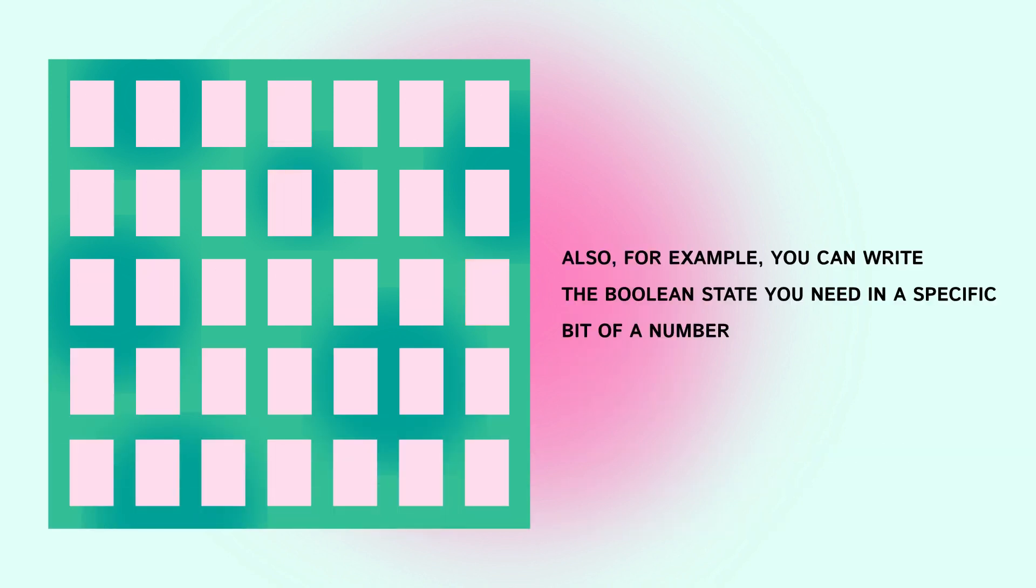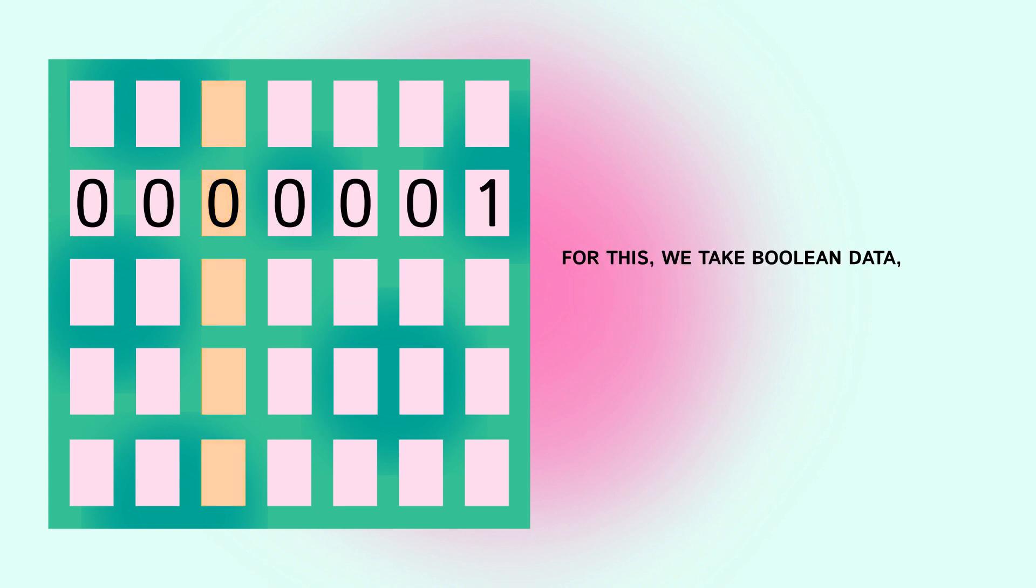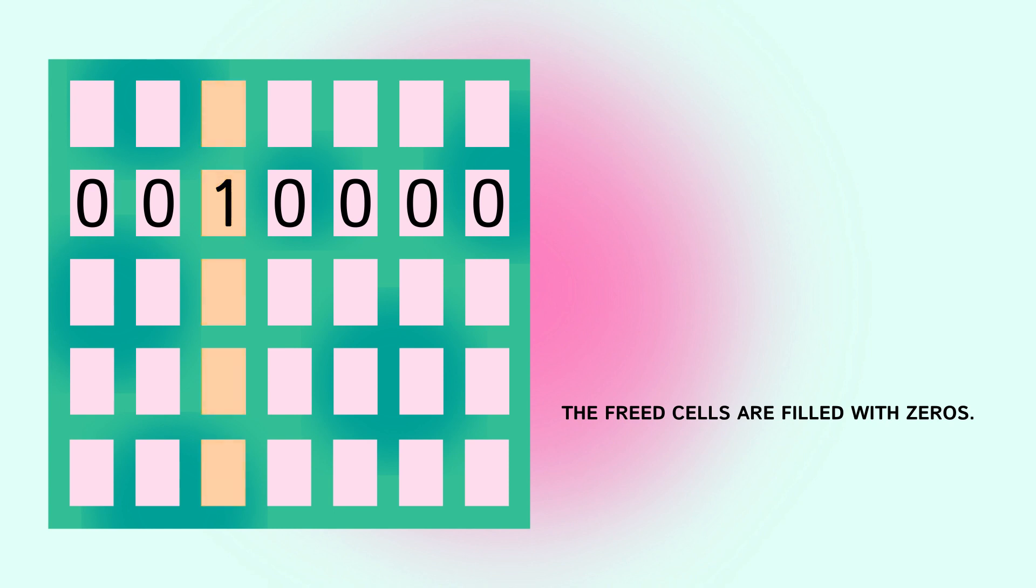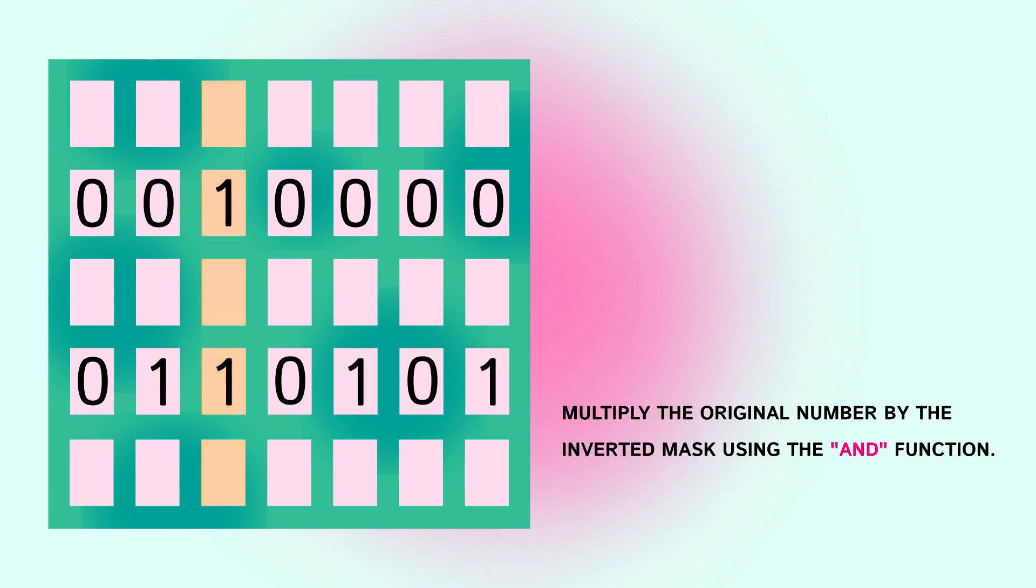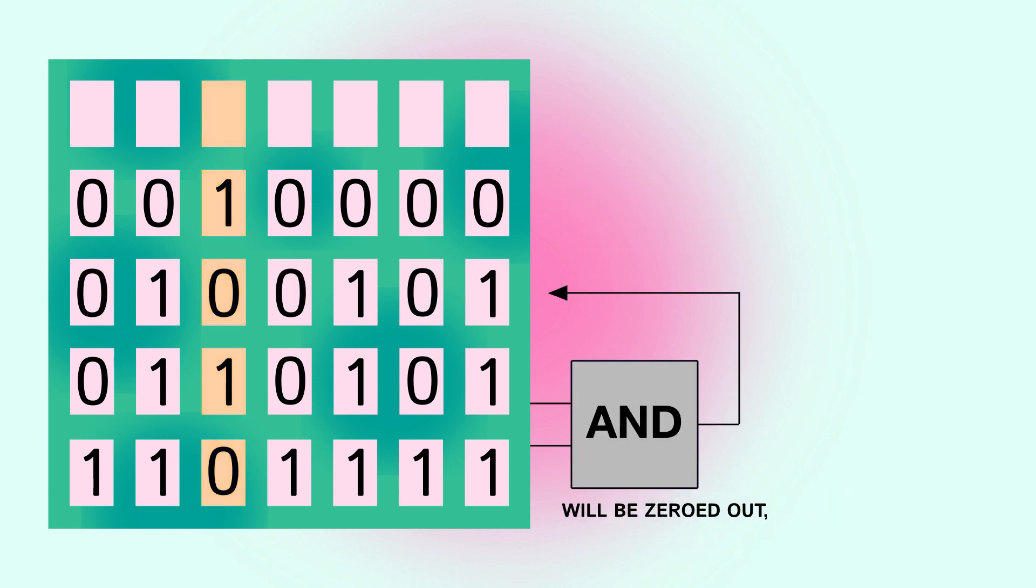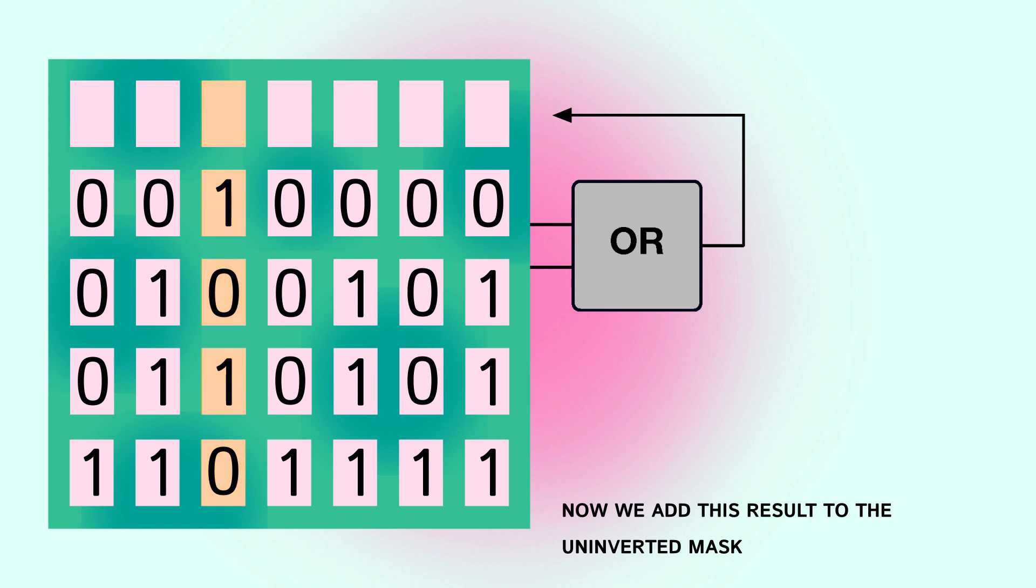Also, for example, you can write the boolean state you need in a specific bit of a number. For this we take boolean data, convert it into integer, then use the left shift function to move it to the required position. The three cells are filled with zeros. Let's call this thing for example a mask. Multiply the original number by the inverted mask using the AND function. Invert using the NOT function. Then the values in the bit we need will be zeroed out and all the others will remain unchanged. Now we add this result to uninverted mask and the three bit is filled with the values we need.